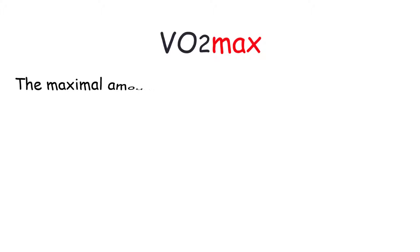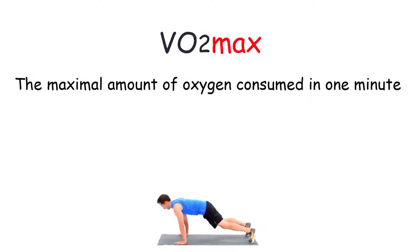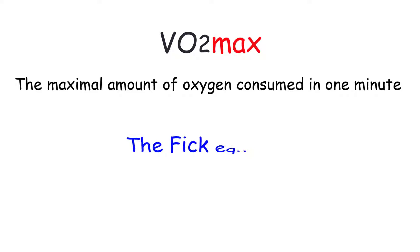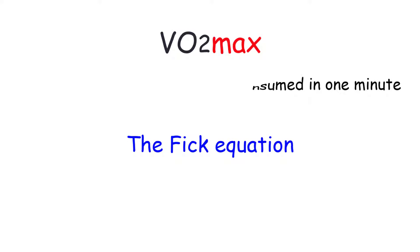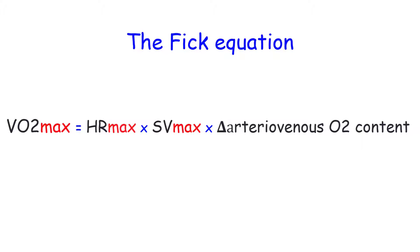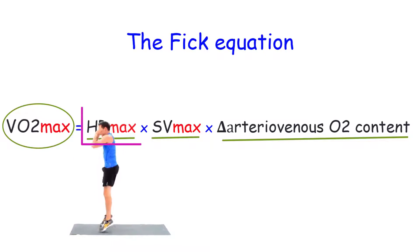VO2 max is the maximal amount of oxygen consumed in one minute and is the measure of aerobic fitness. How does exercise training increase VO2 max? The Fick equation describes the factors affecting VO2 max as follows: VO2 max equals heart rate max times stroke volume max times delta arteriovenous oxygen content. Thus VO2 max can be increased by increasing one of these three variables; however, exercise training does not increase maximal heart rate.